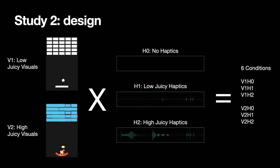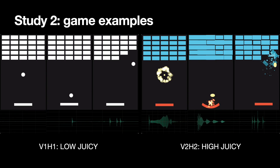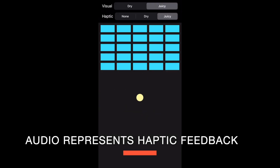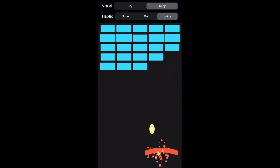In Study 2, we created 6 breakout-style games with varying levels of juicy haptics and visuals. Each participant experienced 2 levels of visual feedback crossed with 3 levels of haptic feedback, for a total of 6 different game conditions. The highest juicy levels were implemented with haptic embellishments designed with successful principles from Study 1. For example, we build anticipation with haptic feedback as the ball animates in, and we play a follow-through haptic effect after the ball hits a paddle.